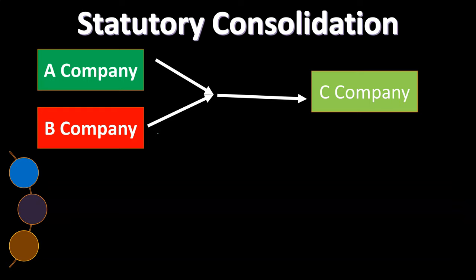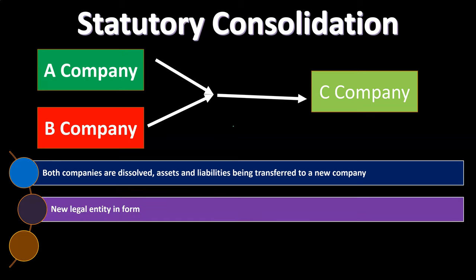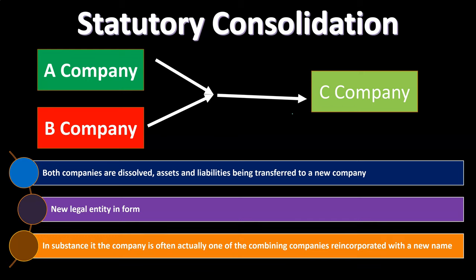Statutory consolidation is another scenario. What if we had these two companies and created another company — say company C — and merged both of their assets into the new company? Both companies are dissolved, with assets and liabilities being transferred to a new company. You have a new legal entity formed because company C is now the new legal entity. However, in substance, the company is often actually one of the combining companies reincorporated with a new name.